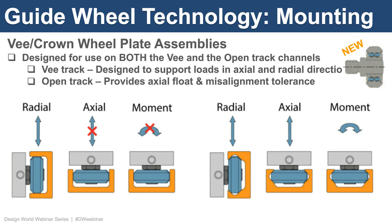We have a new addition to the Utilitrack product line within the SW series of steel wheel products: a new wheel plate version with V-crown hybrid wheels. This new wheel design has both a V feature and a curved crown feature on the outside diameter of the guide wheels. They were designed for flexible use on both the V and open linear track channels. When used with the V track, the VC wheel plate can support applied loads in the radial, axial, and moment load directions to act as the precision linear guide. When used on the open track, it functions like the crown roller version with the ability to provide axial float and angular misalignment capabilities, both key to eliminating binding.